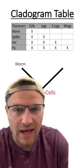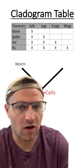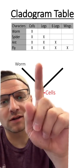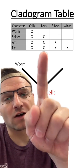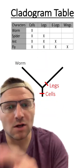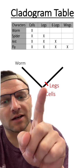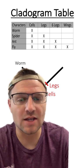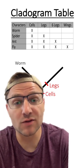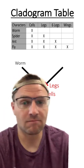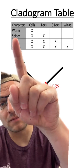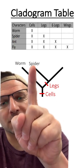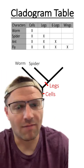I'm then going to determine what adaptation evolves next. And if we look at our table, legs evolve next. I'm going to place legs on the table right here, and I'm going to try to find the species that have cells and legs. And if you look at the table, it's spiders. I'm going to make another speciation event and place spiders here.